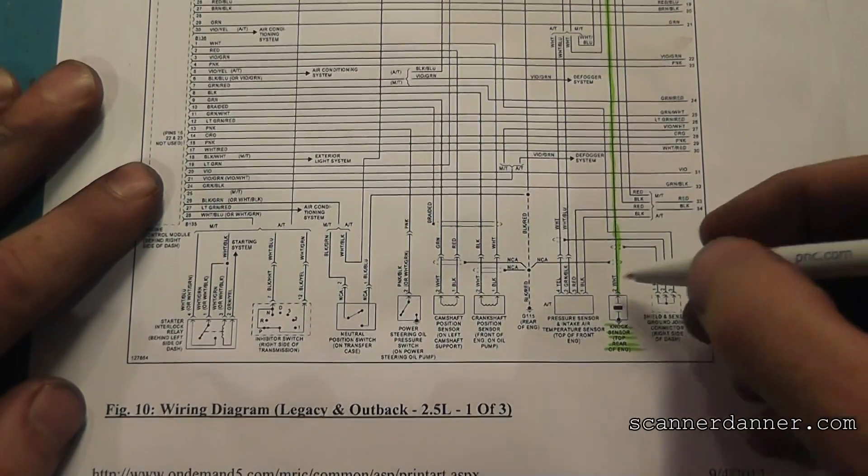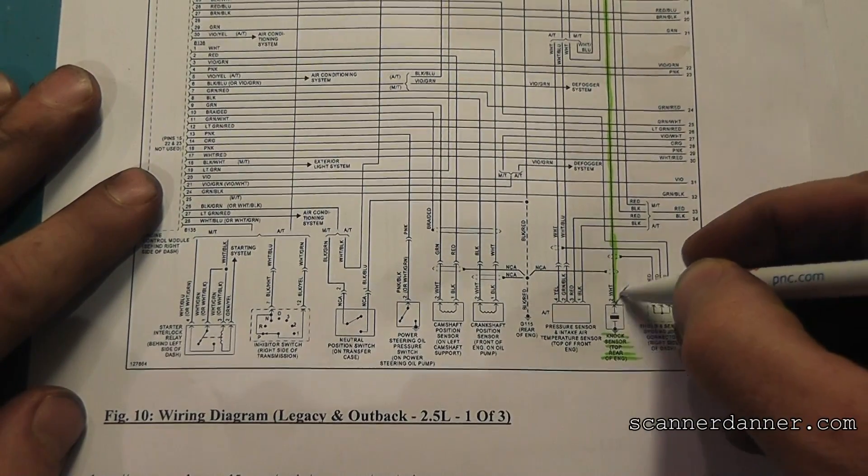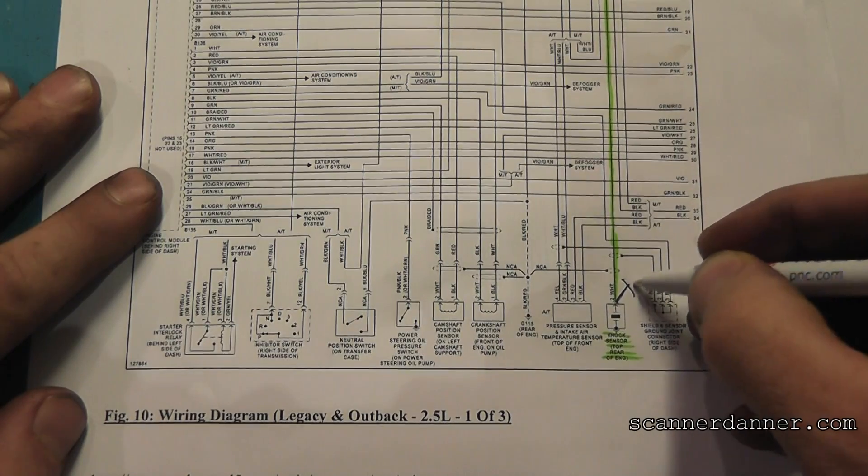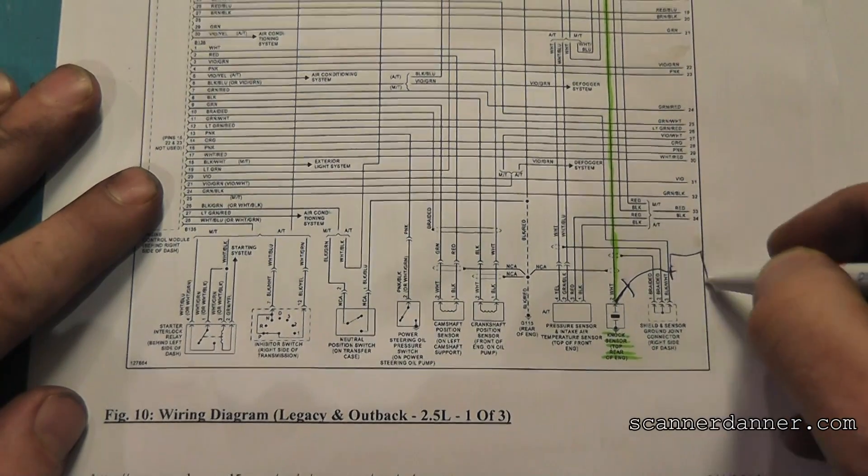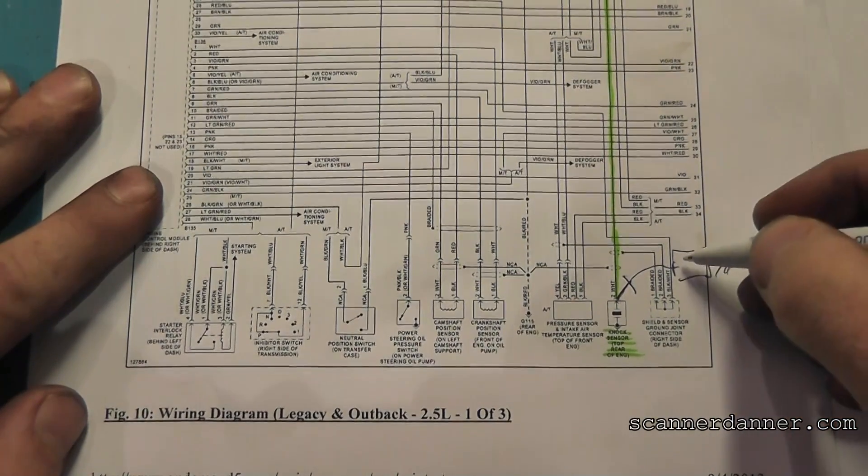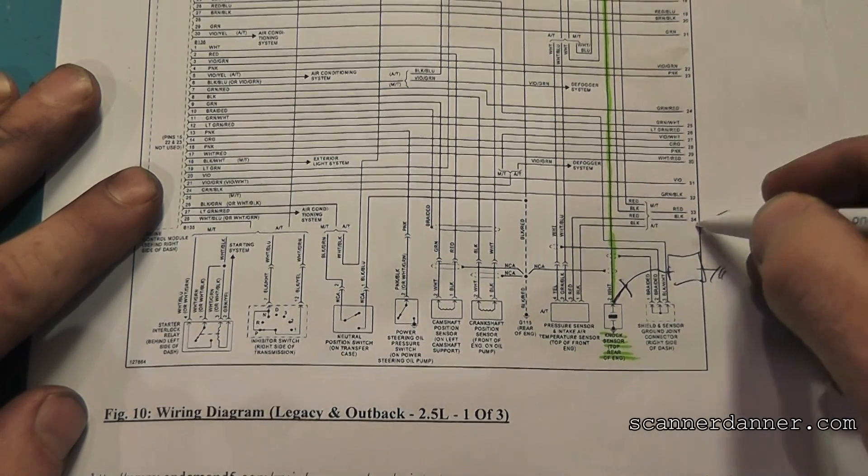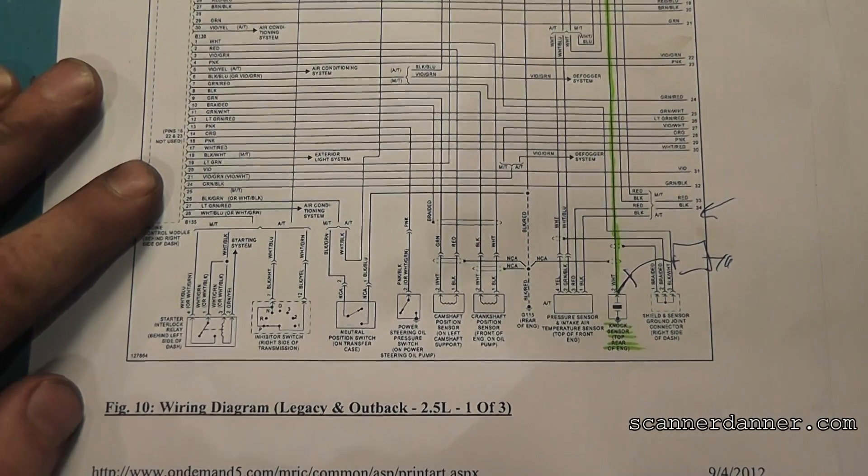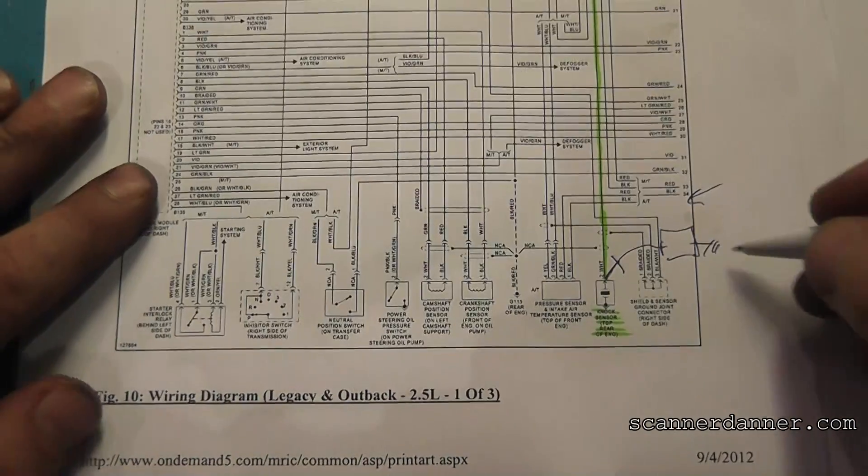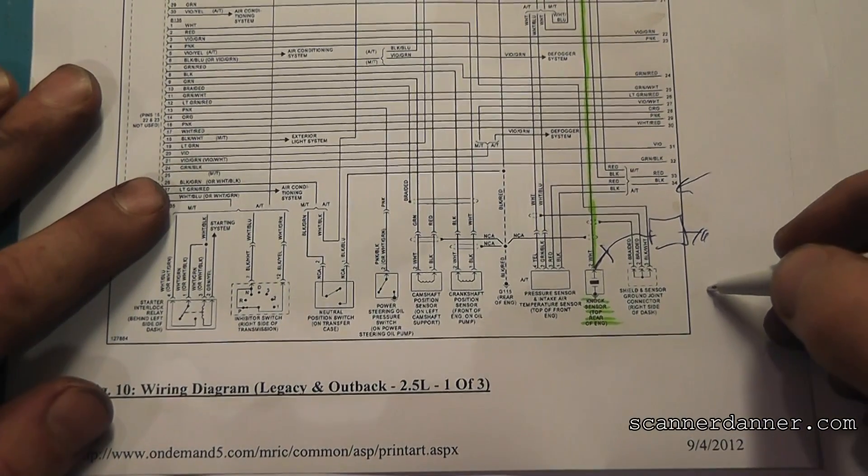Again, a couple different ways we can do this. We can adapt in, back probe the connector, use a T-pin, use our scope, and we can look at this signal while we're tapping on the block with a blunt object, pry bar, hammer next to the knock sensor, and we'll actually make the knock sensor produce a sine wave.